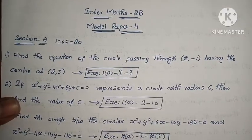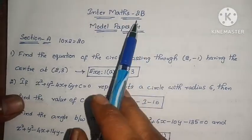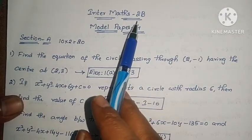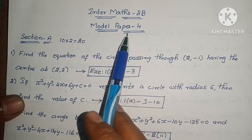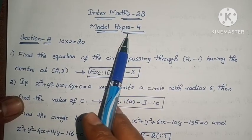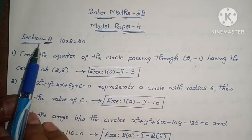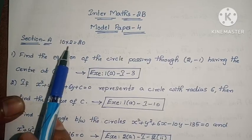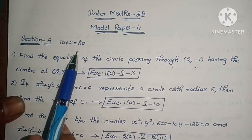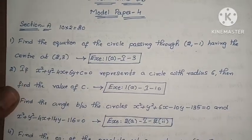Hello, hi, welcome to Parnikka Maths. In the Maths TV, 3 model papers are complete. In this video, model paper 4 is discussed. In the third section, there are 10 problems, 2 marks each, so total 20 marks.